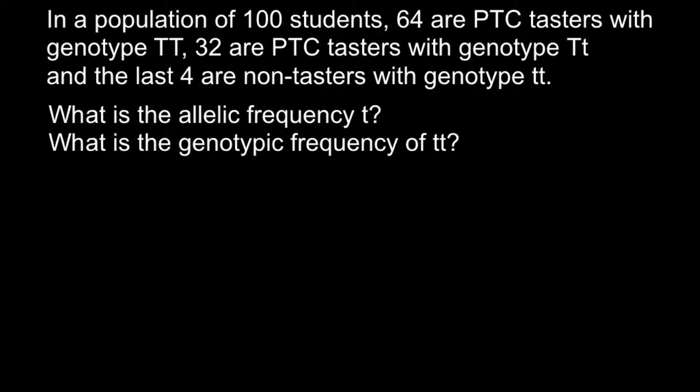Today's problem is: in a population of 100 students, 64 are PTC testers with a genotype that is homozygous dominant, 32 are PTC testers with a genotype that is heterozygous, and the last four are non-testers with a genotype that is homozygous recessive. Here are the two questions: what is the allelic frequency of the allele T, and what is the genotypic frequency of the genotype that is homozygous recessive?